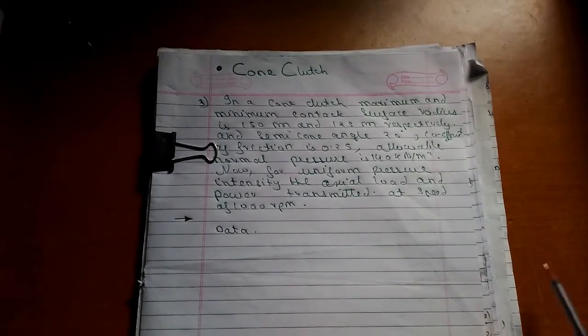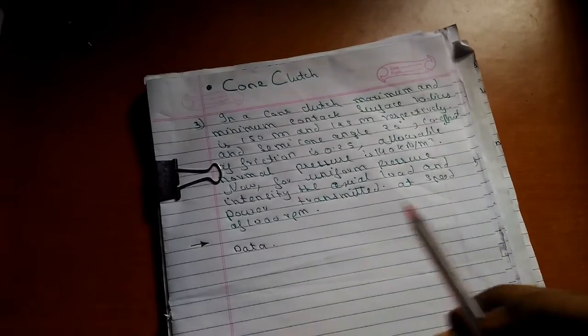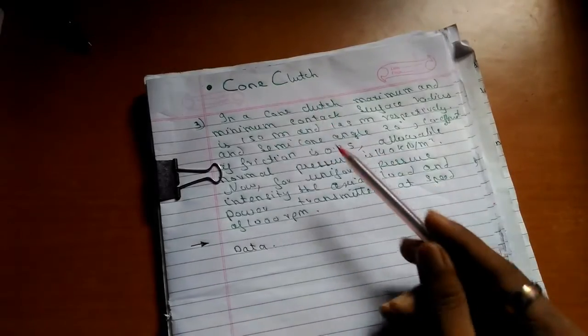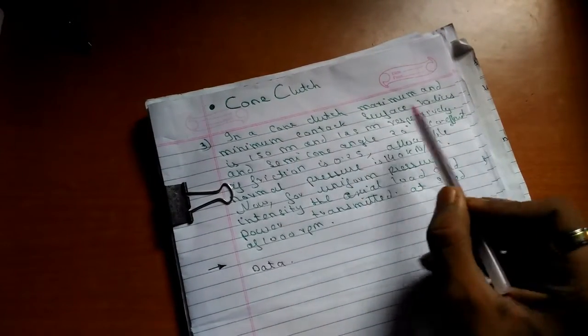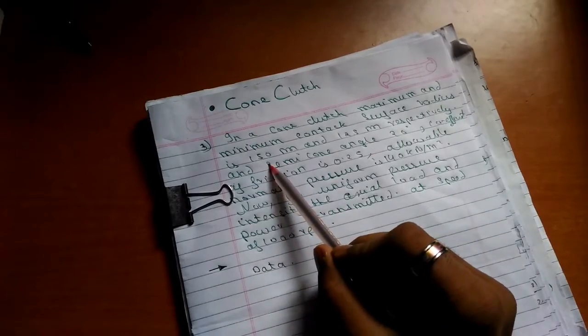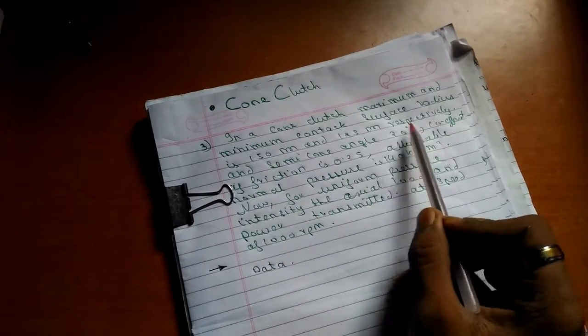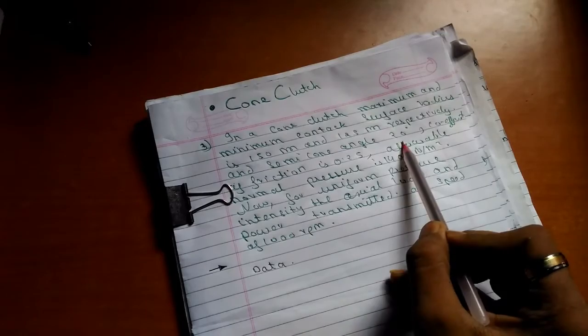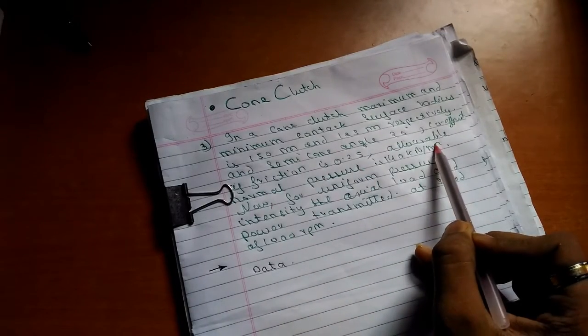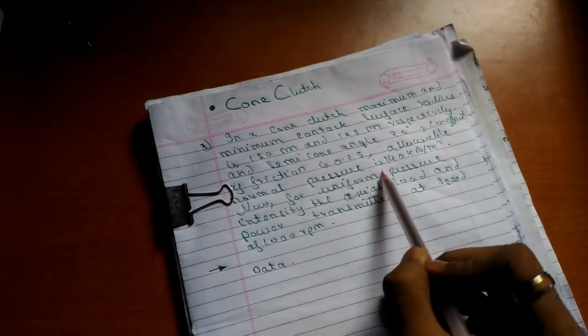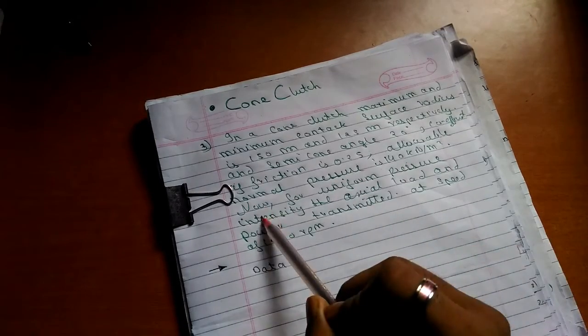Hey guys, our next question is a solution for the cone clutch problem. In a cone clutch, maximum and minimum contact surface radius is 150mm and 125mm respectively, and semi cone angle is 20 degrees.